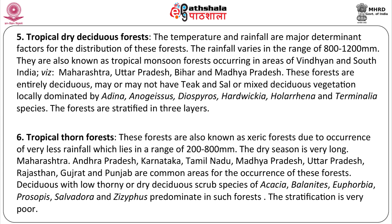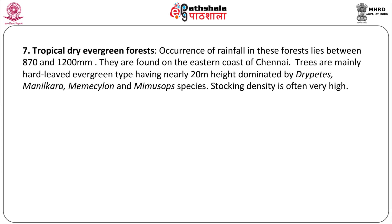Next is the tropical thorn forest. These forests are also known as Zairic forests due to occurrence of very less rainfall, which lies in the range of 200 to 800 millimeters. The dry region is very long. Maharashtra, Andhra Pradesh, Karnataka, Tamil Nadu, Madhya Pradesh, Uttar Pradesh, Rajasthan, Gujarat and Punjab are common areas for the occurrence of these forests. Tropical dry evergreen forests: rainfall lies between 870 and 1200 millimeters. They are found on the eastern coast of Chennai. Trees are mainly hard-leaved evergreen type having nearly 20 meters height.